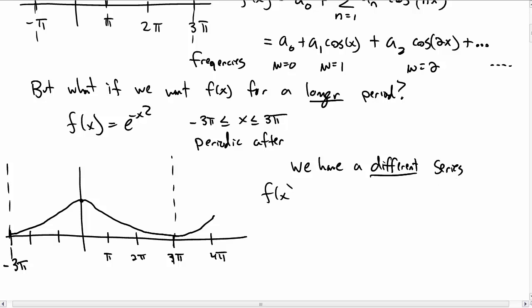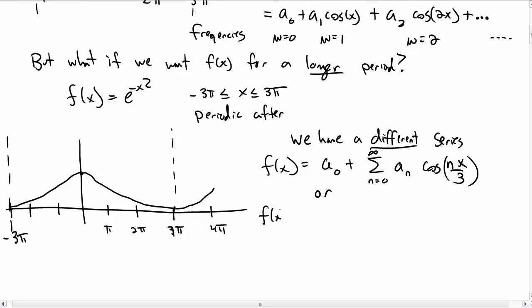So we would have a completely different series representation for f(x). It's still a constant plus a sum of cosine terms, but now inside the cosine terms we have nx over three. Writing out the individual terms: f(x) is a₀ plus a₁ cos(x/3) plus a₂ cos(2x/3), et cetera.